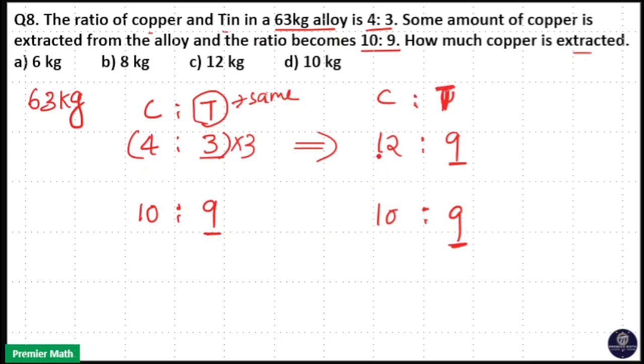That means 12 minus 10 is equal to 2 parts. Only 2 parts of the copper is extracted. So here 12 plus 9.